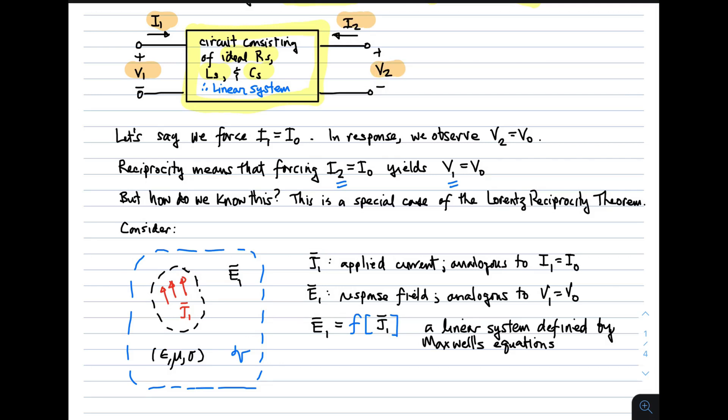every sophomore in electrical engineering knows what reciprocity means. It means the following thing. If we force I1 to be equal to some current, and then we observe the response to be some voltage, then reciprocity means that applying the same current to the other port yields an equal voltage. But the question is, how do we know that? The particular theorem that's relevant here is the Lorentz Reciprocity Theorem.